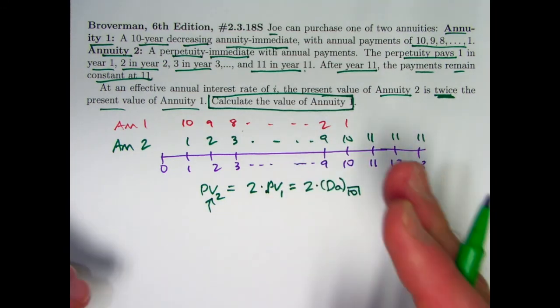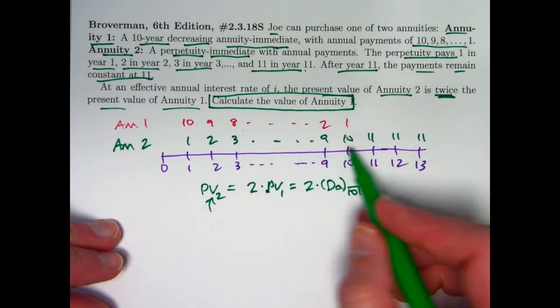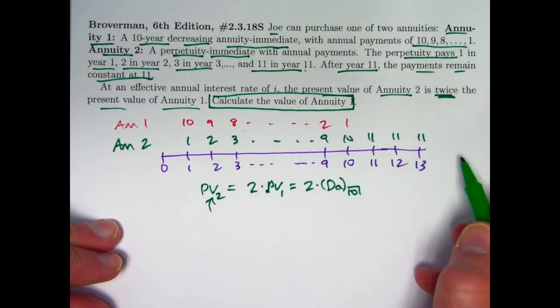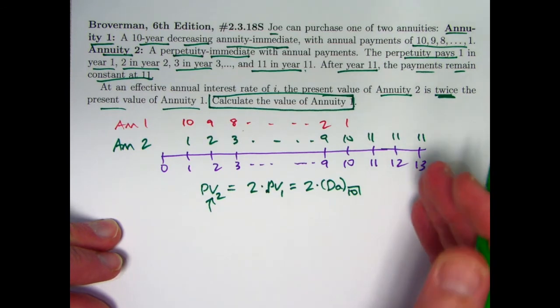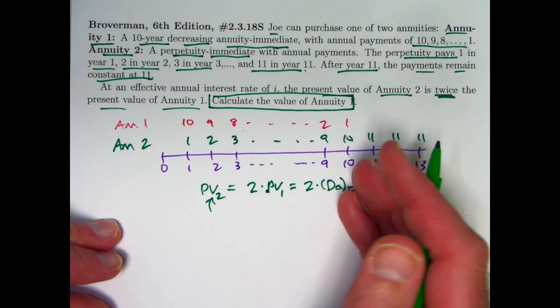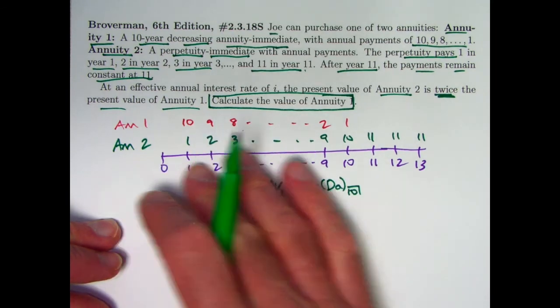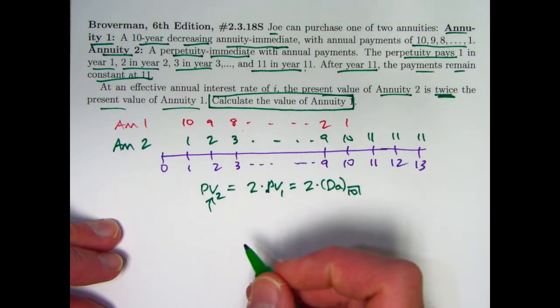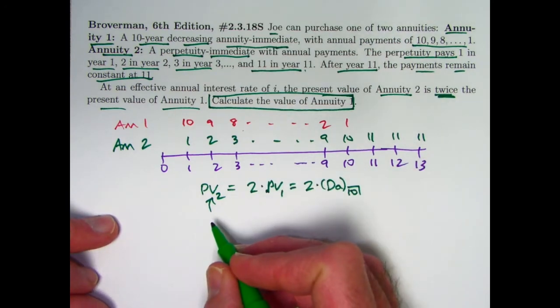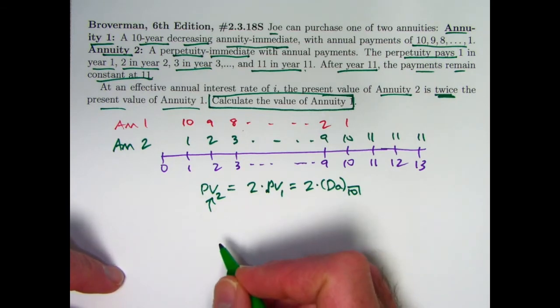Well, I did a video about this recently that you could think about the present value of such a perpetuity that initially increases and then is constant in two ways. Either as a deferred perpetuity, level perpetuity plus an increasing annuity or as an undeferred perpetuity minus a decreasing annuity. And subtracting the decreasing annuity typically, well, at least in that problem was easier and it'll be easier in this problem too.